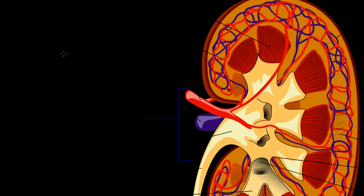What I want to do in this video is talk a little bit about the kidney. This is a big picture of a kidney, and I want to talk about how it operates at its smallest functional level, and that's the nephron. So we're going to talk about the kidney and the nephron. The kidney — we have two of them — is the organ most famous for producing or allowing us to excrete waste.